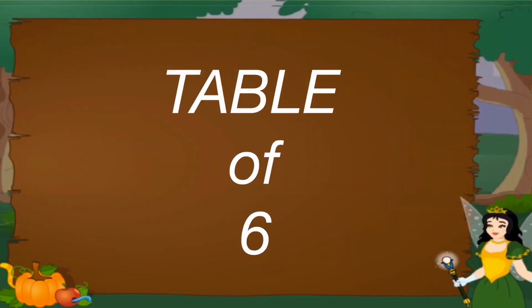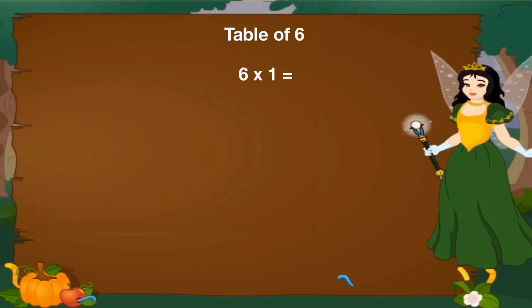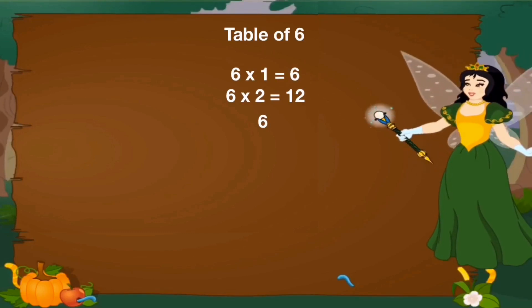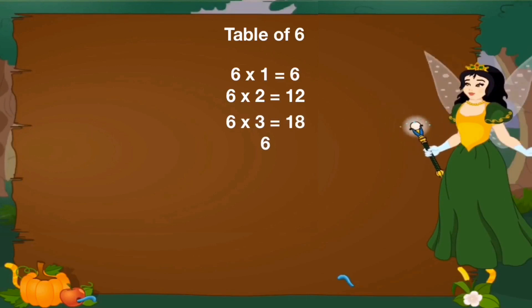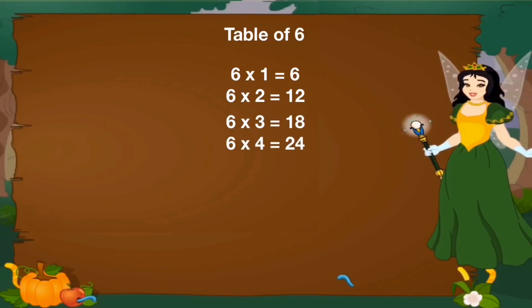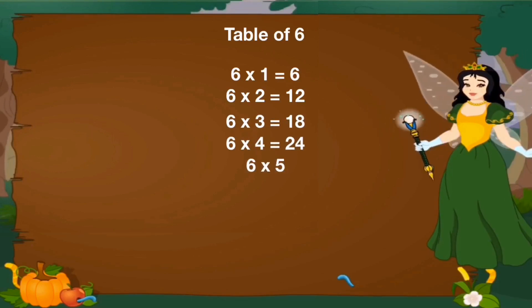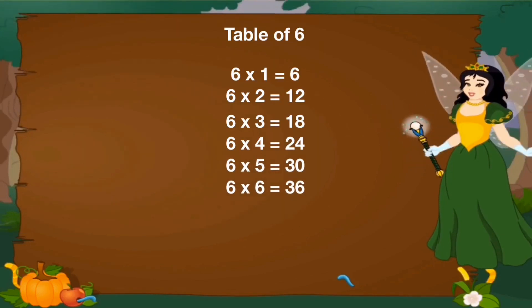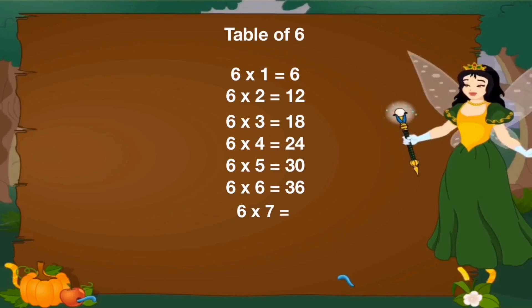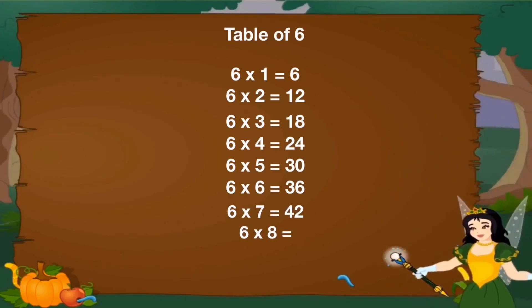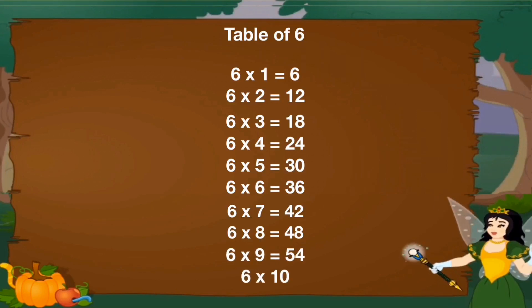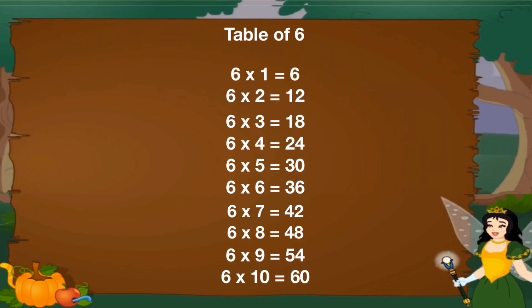Let's revise table of 6. 6 1's are 6, 6 2's are 12, 6 3's are 18, 6 4's are 24, 6 5's are 30, 6 6's are 36, 6 7's are 42, 6 8's are 48, 6 9's are 54, 6 10's are 60.